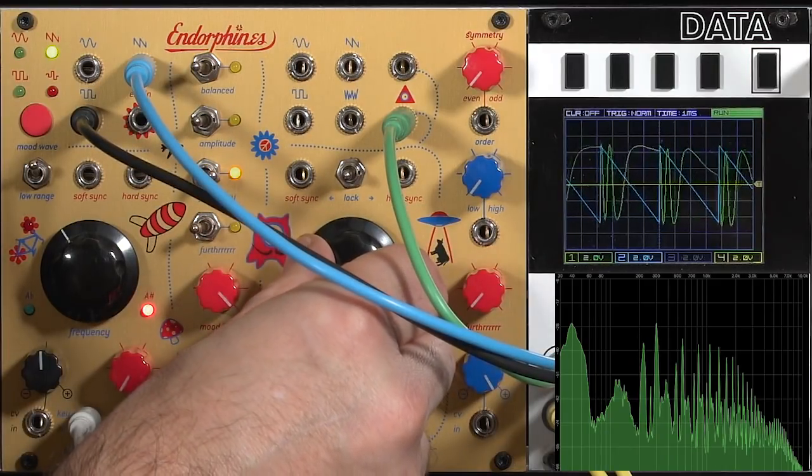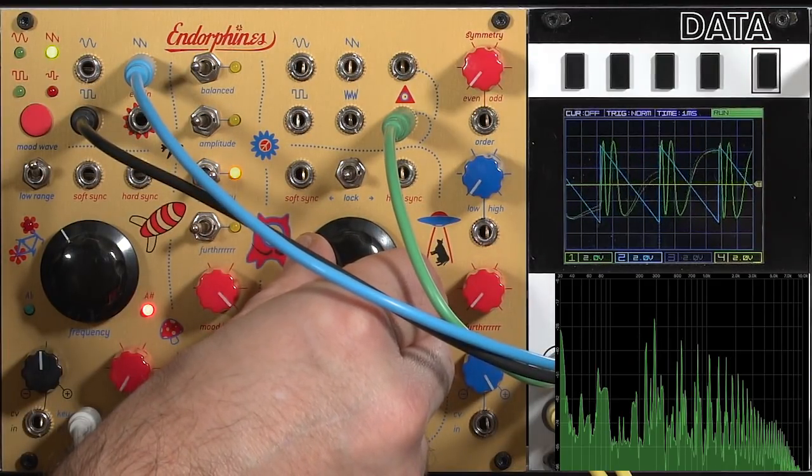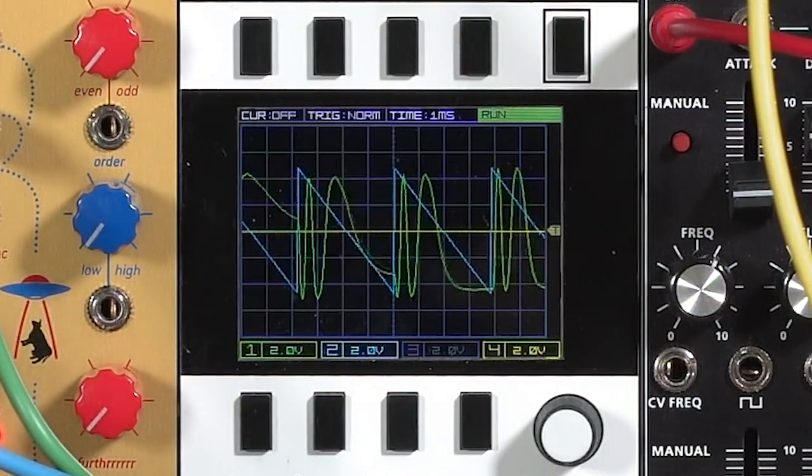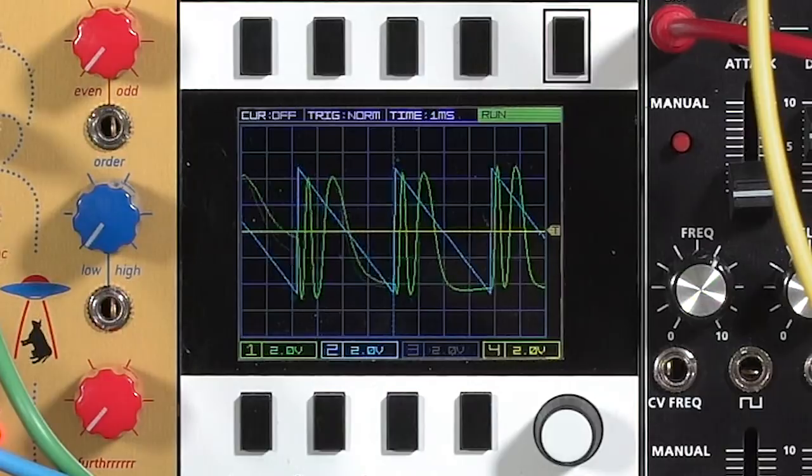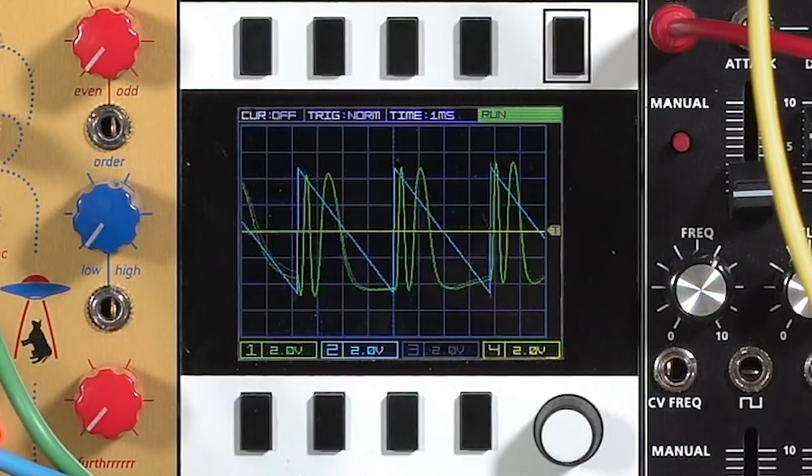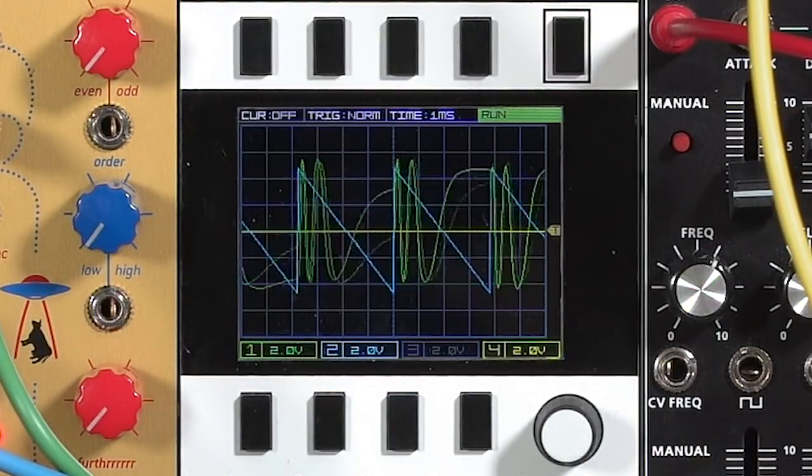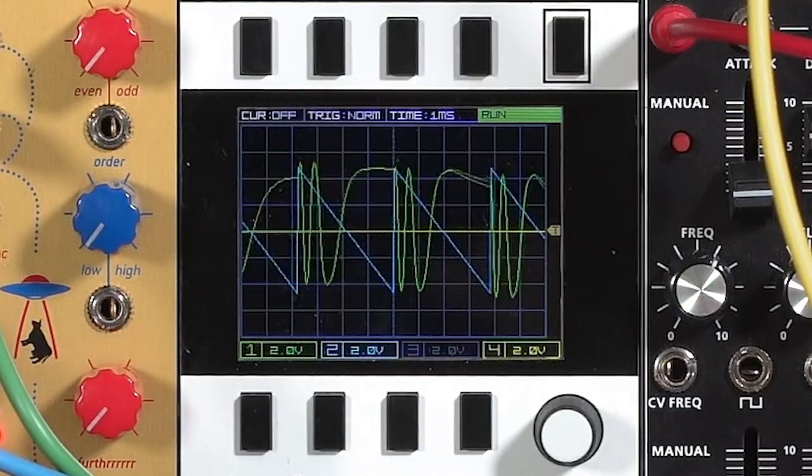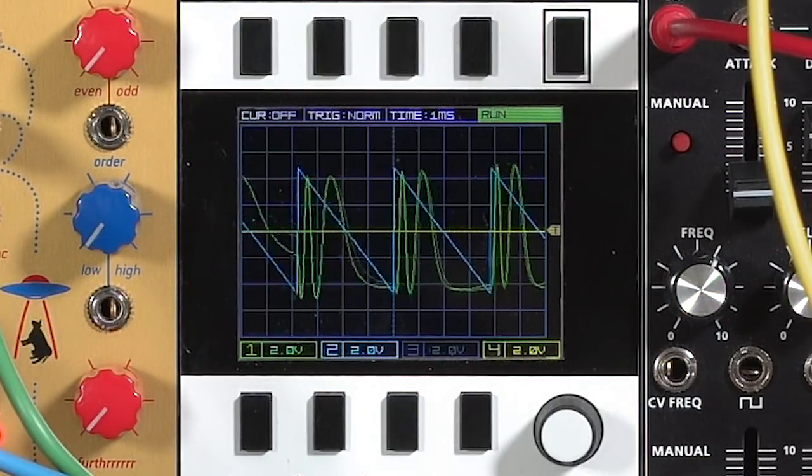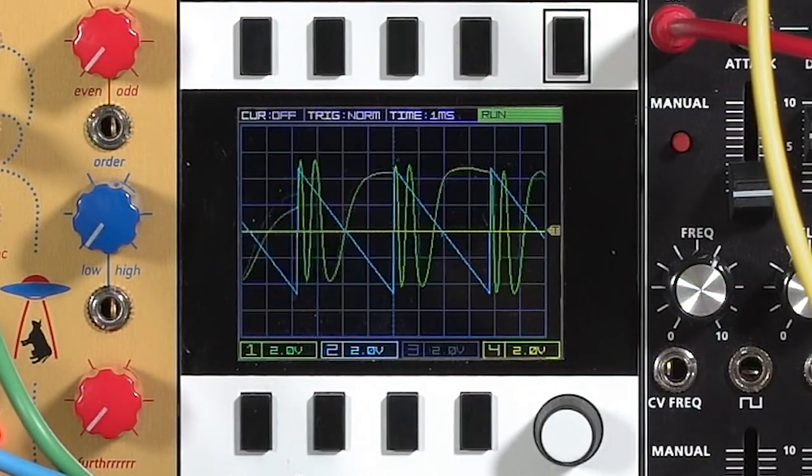And you can see how when the sawtooth is high, it's speeding up the sine wave output. When sawtooth is low, it's slowing it down to the point where it actually stalls the waveform. And that's the side effect of not being a through zero FM oscillator. It can't go below zero hertz, so it's going to stall when asked to go down that low.